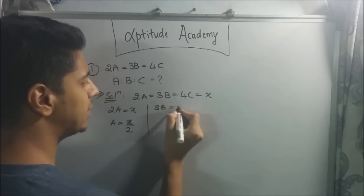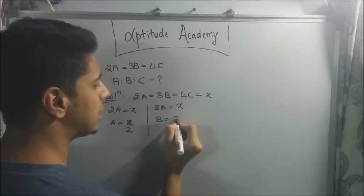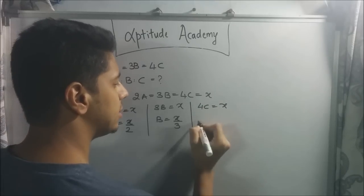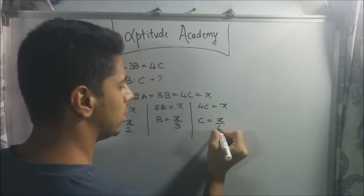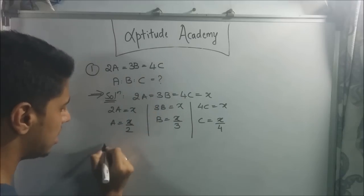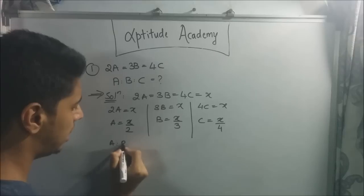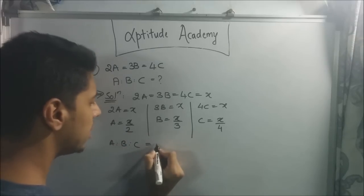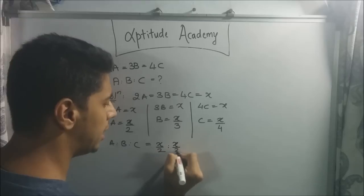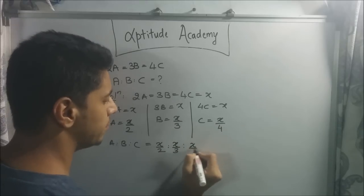Similarly, you can say 3b equals x, so b equals x by 3, and 4c equals x, so c equals x by 4. Now you will take the ratio, so a:b:c equals x by 2 is to x by 3 is to x by 4.